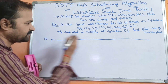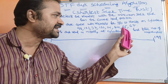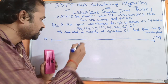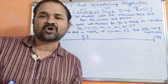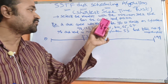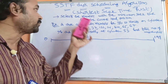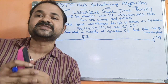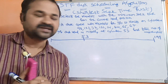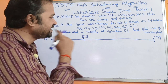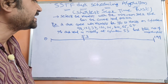The read/write head is initially at cylinder 53. From the current head position of 53, we need to select the nearest value. The requests are: 98, 183, 37, 122, 14, 124, 65, and 67.